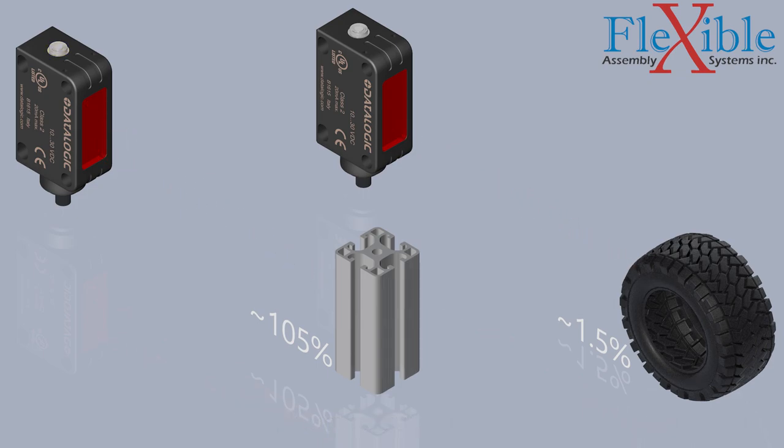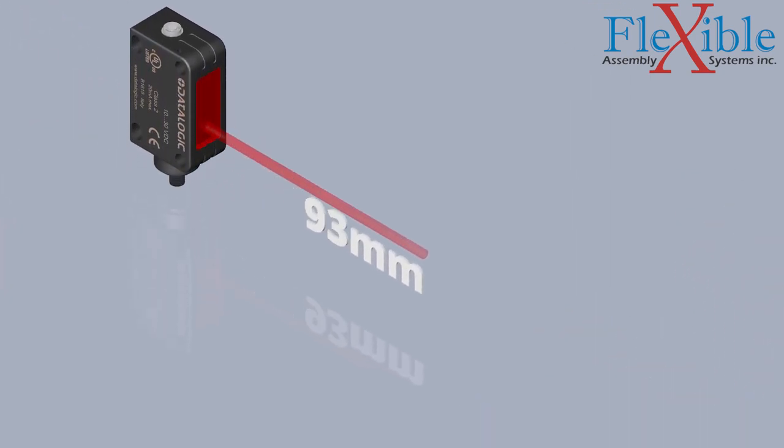For diffused proximity sensors, the maximum range is around 300-500mm with these Datalogic S100 miniature sensors. Any target within this range will be detected as soon as it reflects enough light back to be seen.